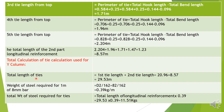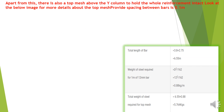Total calculation of ties for the Y column: total length of ties equals first part length plus second part length = 20.96 + 8.57 = 29.53 running meters. Weight of steel for 1 meter of 8 mm bar: D²/162 = 64/162 = 0.39 kg per running meter. Note: sorry for the typographical error of 82 — it should be read as 64. Total weight of steel required for ties: 29.53 × 0.39 = 11.51 kg.